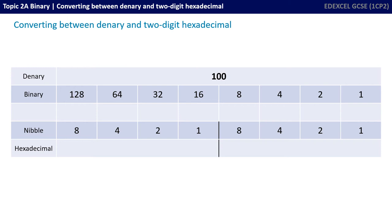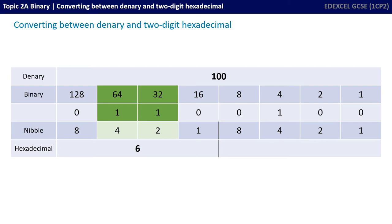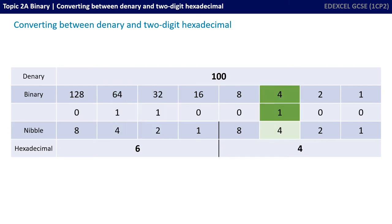Let's do one last one: 100. Why don't you pause the video here, work through this one yourself, and then unpause the video and see if you get the same answer? So there's 100 written out in binary. Starting with the left-hand nibble, we have a 1 in the 4 column and a 1 in the 2 column — using the mini binary weighting line for the nibble, not the full field weightings. So 4 and 2 is 6. The right-hand nibble just has a 1 in the 4 column, so that's 4. The denary number 100 in hex is 6, 4 — remember, that's 6, 4, not 64.